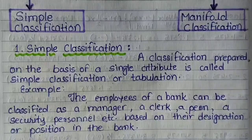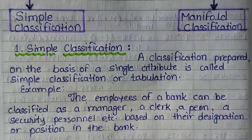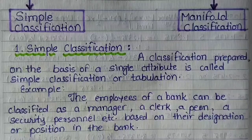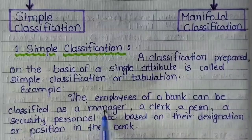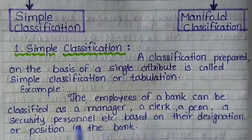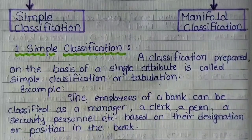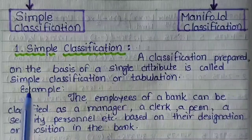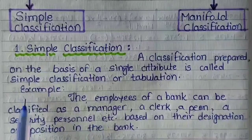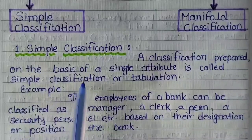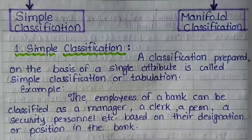Friends, हम एक bank staff को कई तरीकों से classify कर सकते हैं, जैसे कि male employees, female employees, उनके designation के हिसाब से. तो इस example में केवल designation के हिसाब से ही classify किया गया है, जैसे कि manager, clerk, peon, security personnel. तो यहाँ पर जब आप table तैयार करेंगे तो केवल एक ही column बनाएंगे जिसमें designation और उसमें manager, clerk, peon, security और उनके numbers लिख देंगे, total हो जाएगा. तो यह simple classification माना जाता है.